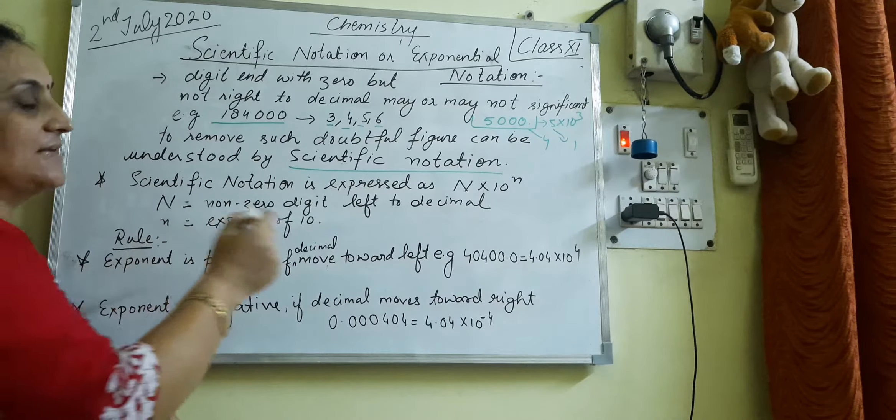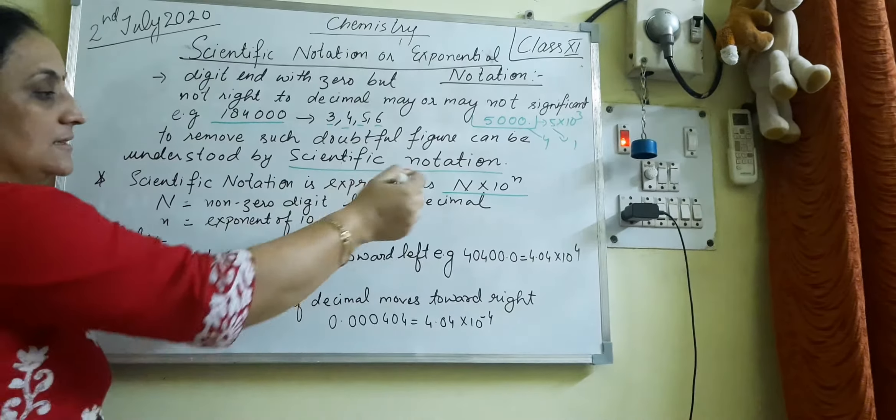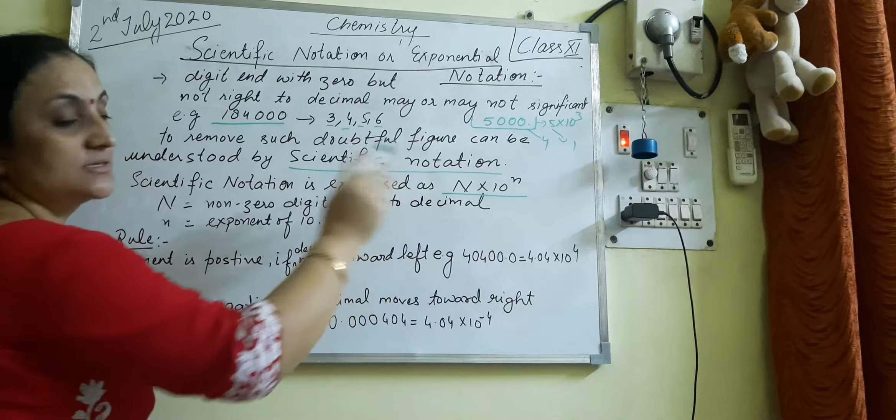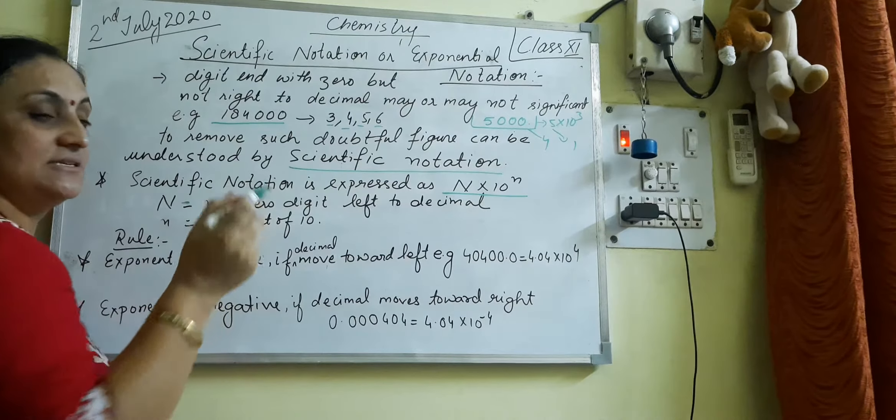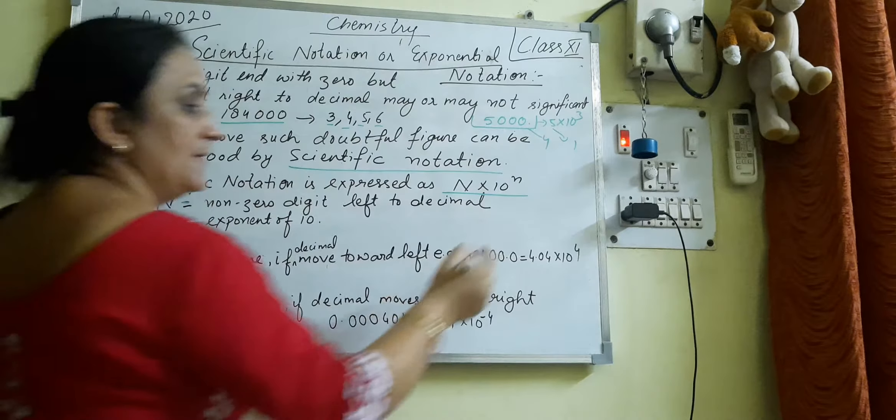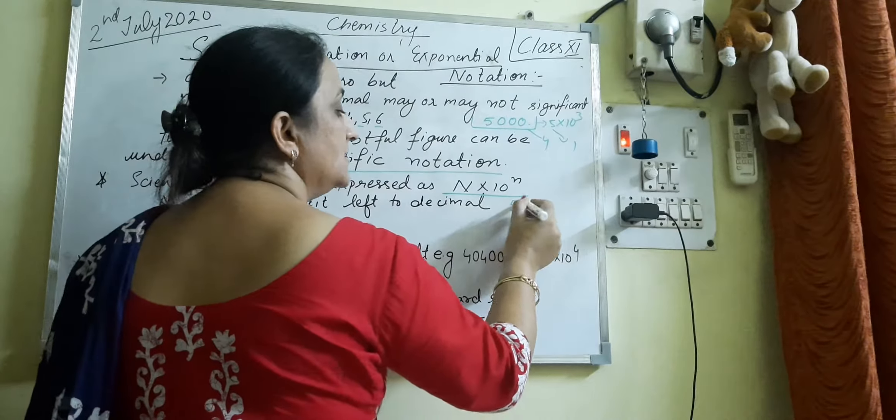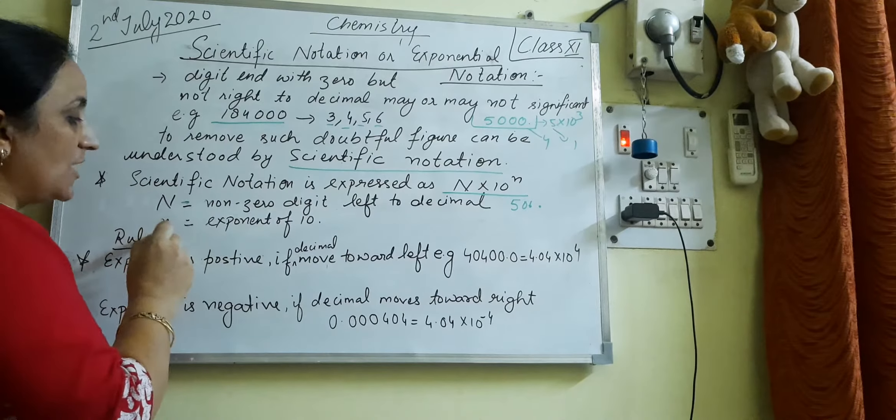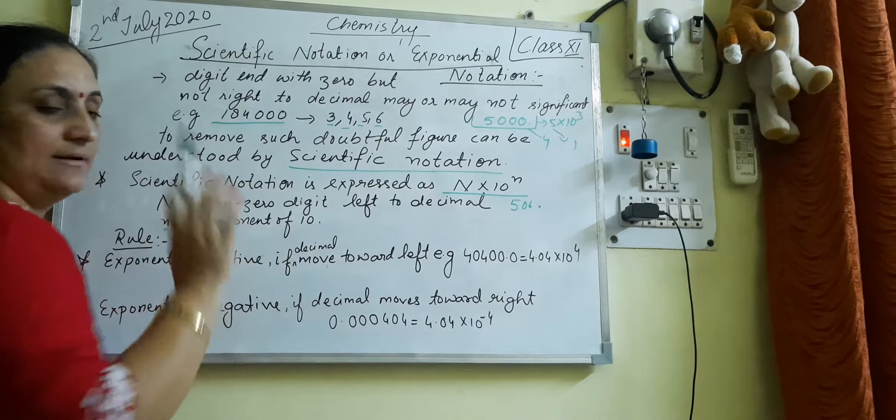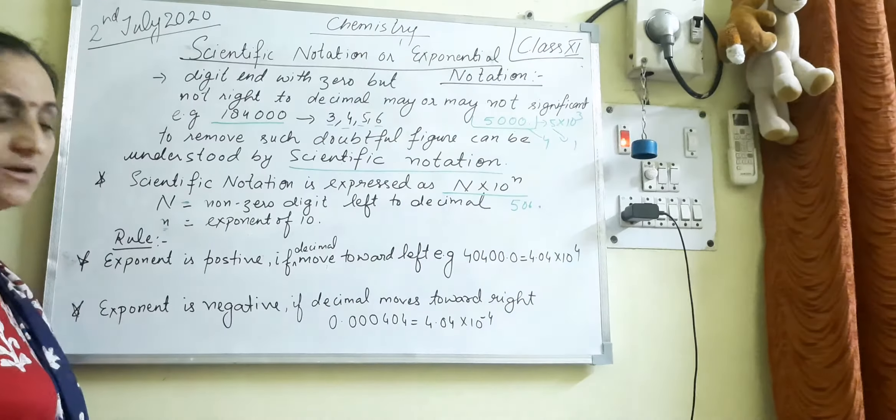So scientific notation is expressed as N into 10 raise to power small n. This is a capital N and this one is a small n. Capital N means it is a non-zero digit which is left to the decimal point. And small n is the exponent of 10. So there are also rules to express such type of figures.